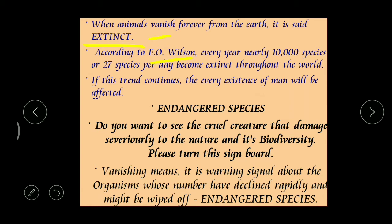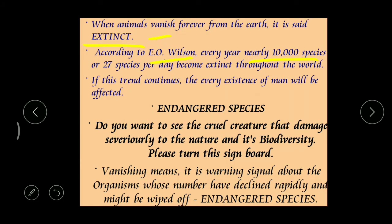According to famous scientist E.O. Wilson, every year around 10,000 species - or 27 species per day - become extinct throughout the world. These numbers are very important: 10,000 species per year, or 27 per day. If this process goes on, it will ultimately become very difficult for human beings, because we are totally depending on plants and animals for everything. When all plants and animals start disappearing, we will suffer. That is why we should be very careful, and it is our responsibility to protect each and every living creature on this planet.